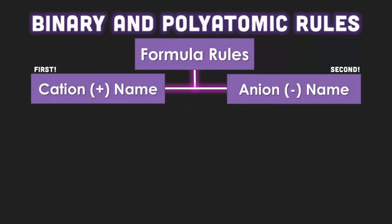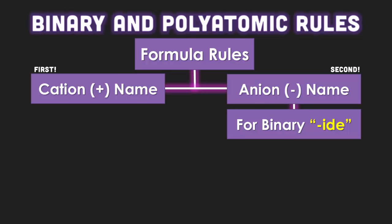Binary and polyatomic ion rules have the same idea. You put the cation name first, and then the anion name second. It's a little bit more than that. The anion ends up with an -ide ending, though. So you chop off the ending and you add -ide instead.